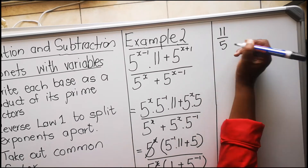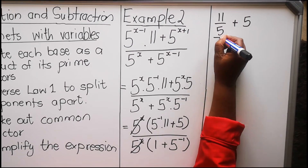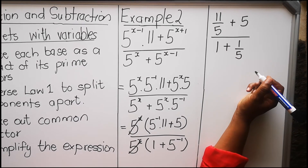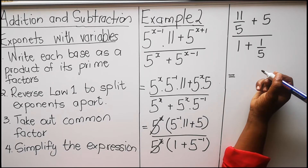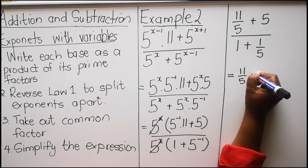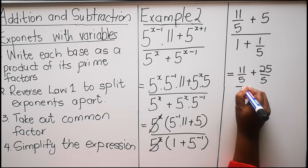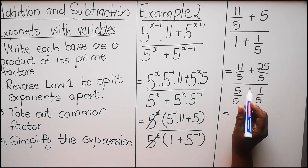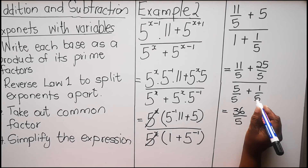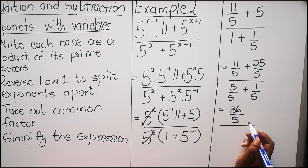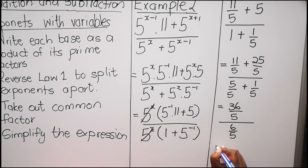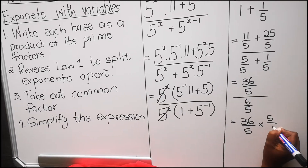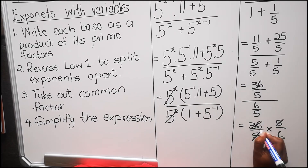So I have 11 over 5, plus 5, which gives 1 plus 1 over 5. That gives us 36 over 5. Let's divide by 6 over 5. Then we have 36 over 5, and when we change the divide to multiply we swap the fraction around. Then the 5 will cancel the 5 and then your answer will be 6.